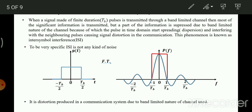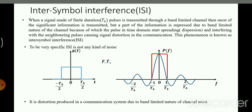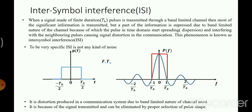Can we overcome this problem? Yes — if we design the pulse properly, maybe we can overcome it. ISI is because of the signal transmitted: the shape of the signal provides infinite bandwidth, and when you try to limit the bandwidth, it ends up spreading the signal in time domain. ISI can be eliminated by proper selection of the pulse shape.